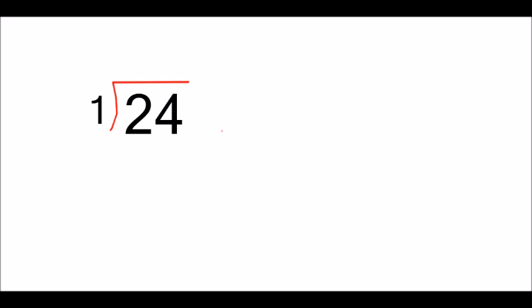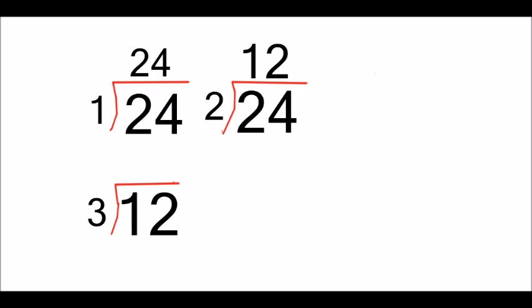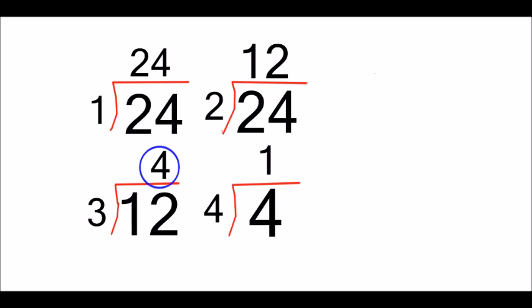For example, with 24: 24 divided by 1 is 24, 24 divided by 2 is 12, 12 divided by 3 is 4, and 4 divided by 4 is 1. The last number we used before we got to 1 was 4. Therefore, if you have 24 different ways, then you have 4 things.